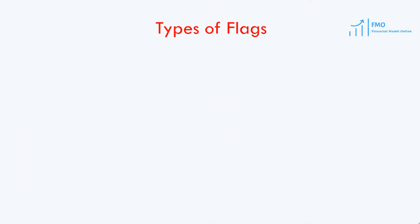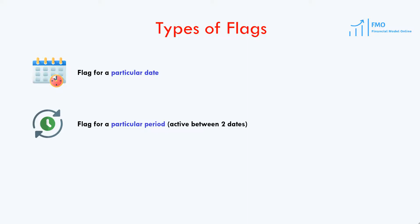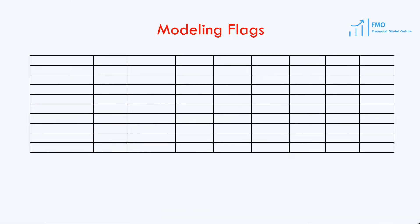We will have different types of flags in our model. There are flags for a particular date, which will mark the particular date when an event is happening. There are flags for a particular period, which will return the value of 1 for several dates. And there are flags that mark events before or after a particular date.